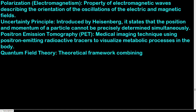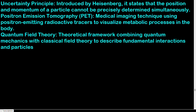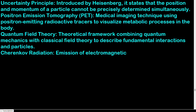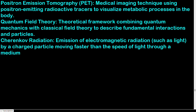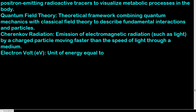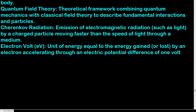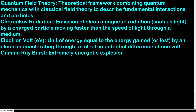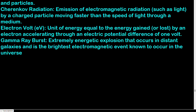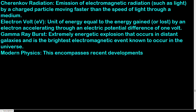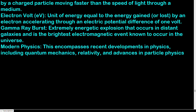Quantum field theory: theoretical framework combining quantum mechanics with classical field theory to describe fundamental interactions and particles. Cherenkov radiation: emission of electromagnetic radiation by a charged particle moving faster than the speed of light through a medium. Electron volt (eV): unit of energy equal to the energy gained or lost by an electron accelerating through an electric potential difference of one volt. Gamma ray burst: extremely energetic explosion that occurs in distant galaxies, the brightest electromagnetic event known to occur in the universe. Modern physics: encompasses recent developments in physics, including quantum mechanics, relativity, and advances in particle physics and cosmology.